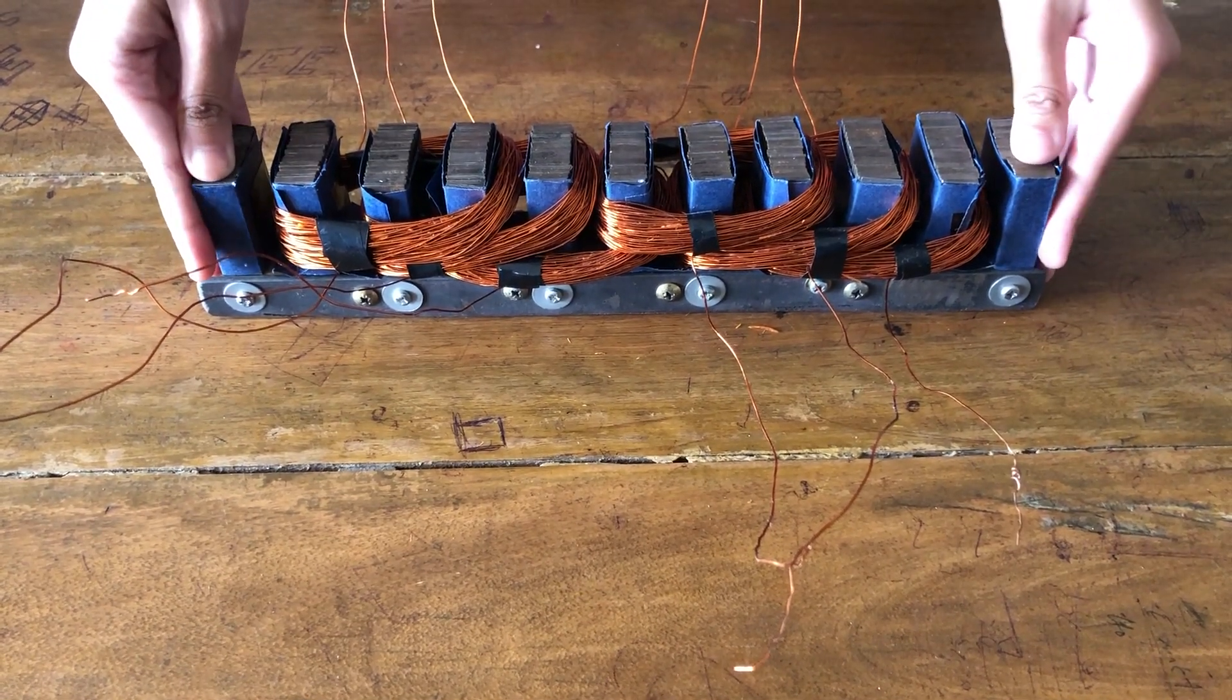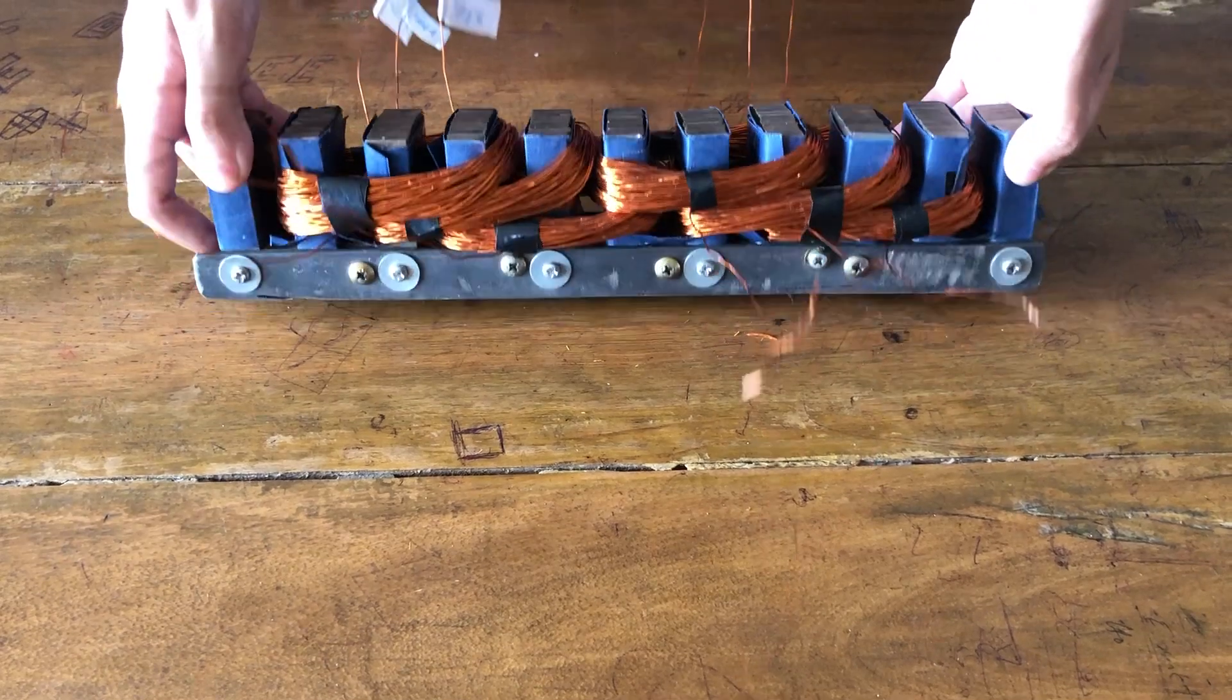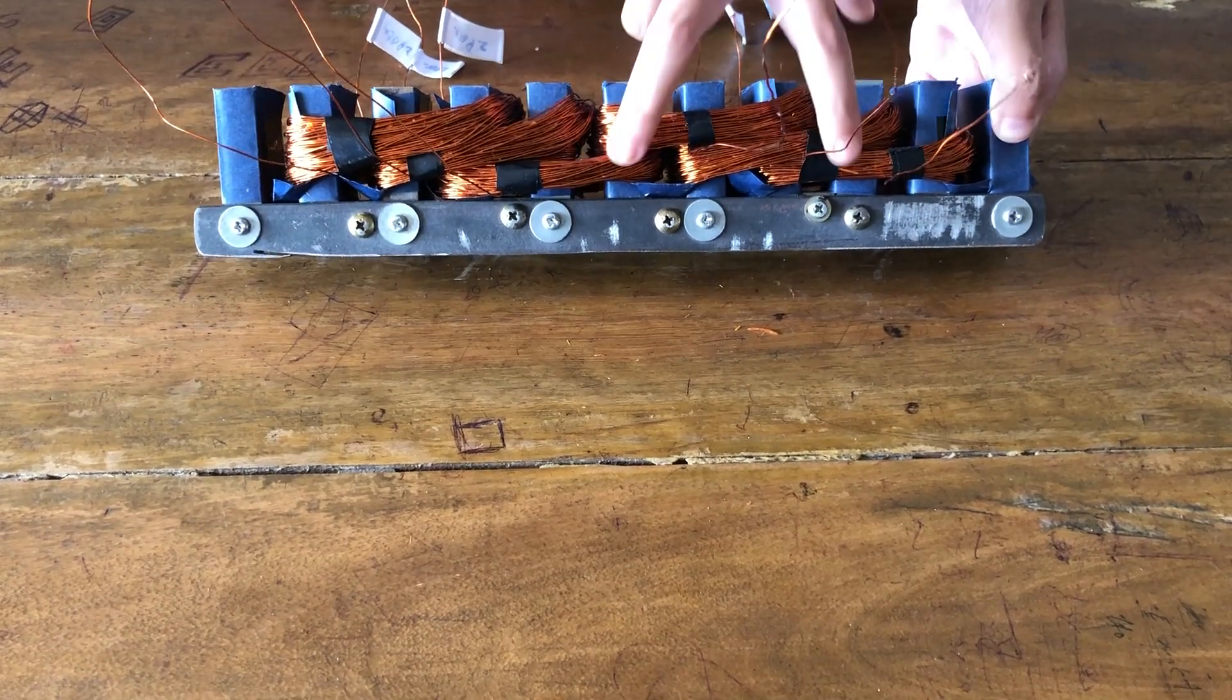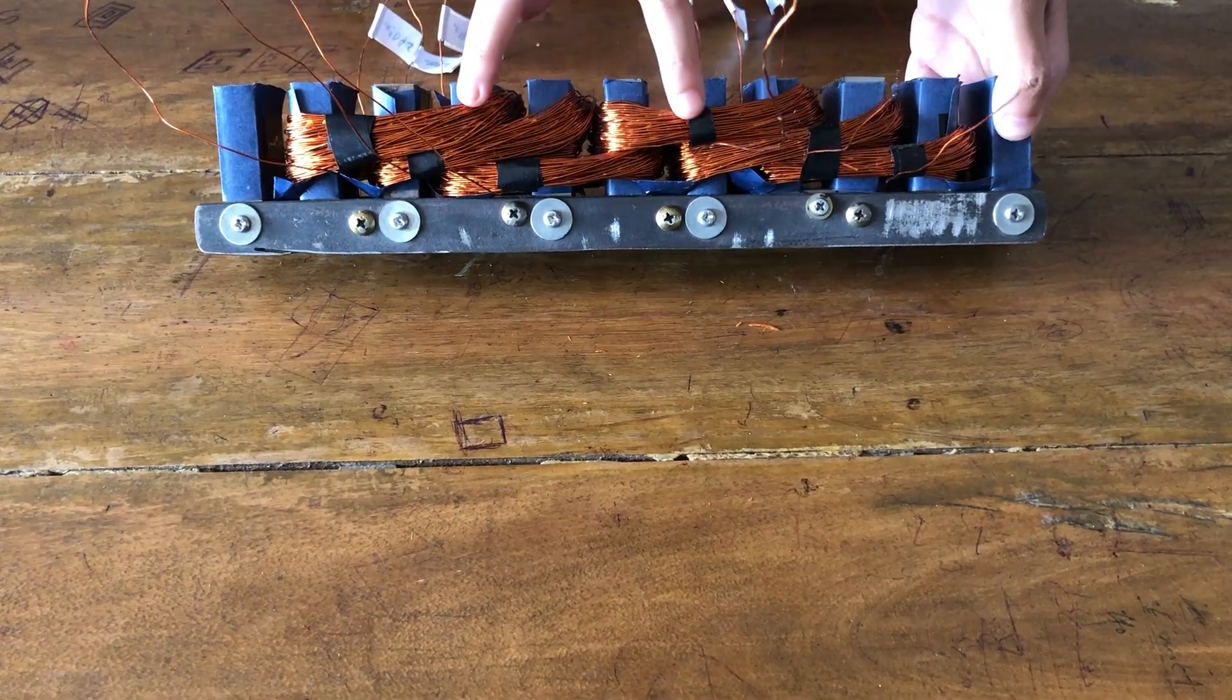Here, we made a three-phase linear induction motor. We have two coils per phase. This is our phase A, this is phase B, and here is phase C.